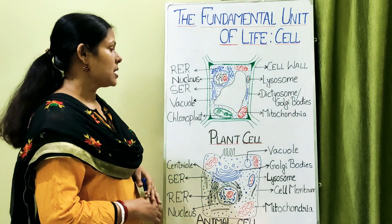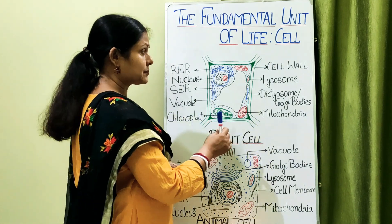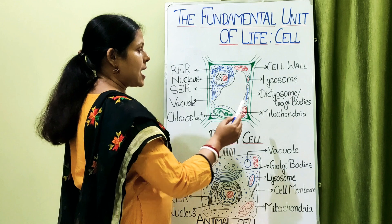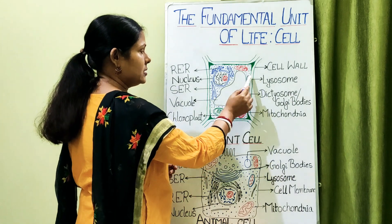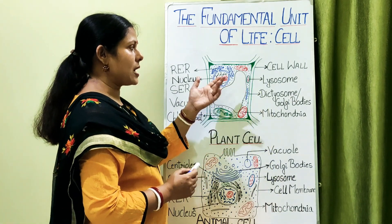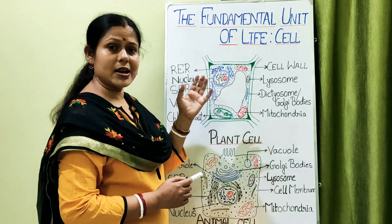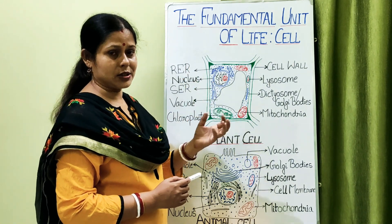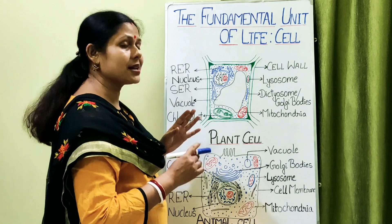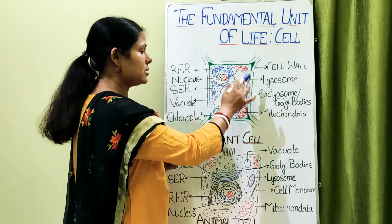A plant cell is bounded by two membranes: the outermost one is called the cell wall and the inner one is called the cell membrane. Inside, every cell has a cytoplasm — a jelly-like substance inside which all the cell organelles reside.